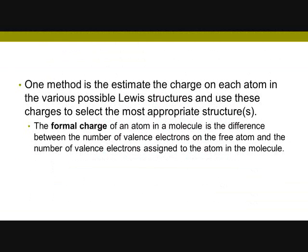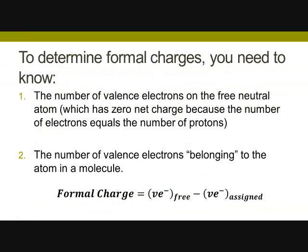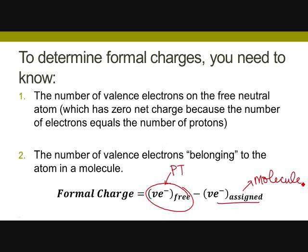We will use formal charges to help us predict which are appropriate structures. The formal charge is the difference between the number of valence electrons on the free atom versus the number of valence electrons assigned in the molecule. The valence electrons for the free atom is what is assigned from the periodic table — so oxygen has six valence electrons, you plug in six. The assigned value is what belongs to it in the molecule drawing, and it could be different depending on whether oxygens are double bonded versus single bonded.